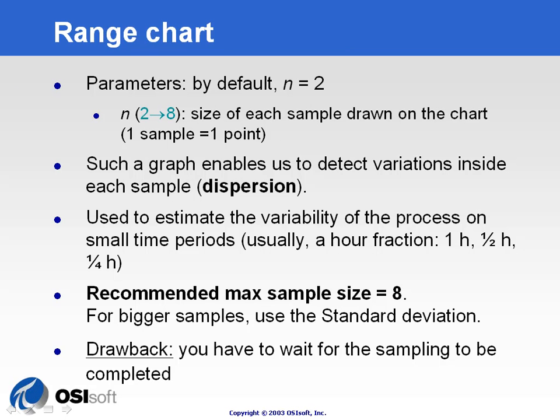The range chart uses a minimum sample size of 2, going up to 8 observations per sample. We use an R chart to assess the short-term variability of the process using a small sample size or short period of time. For a larger sample size or longer period of time, we will use a standard deviation chart, which will be introduced in a few slides.